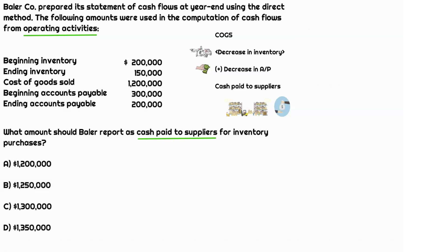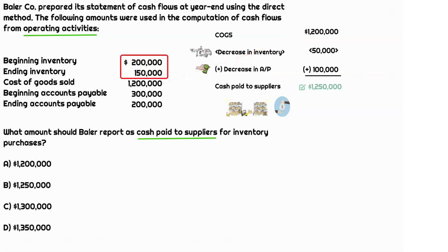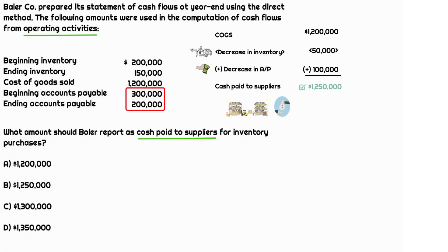If before making adjustments our cost of goods sold amount was $1.2 million, how much would it be after adjustments? Inventory went down in the current year — beginning balance of $200,000 and ending inventory of $150,000. A decrease in inventory means less inventory was purchased, which is a decrease in cash outflow, so we decrease cost of goods sold by $50,000. A decrease in accounts payable means we paid back previously owed debt — purchasing inventory on credit and then paying it — which is cash outflow, an increase to cost of goods sold of $100,000. So total cash paid to suppliers would be $1.25 million.